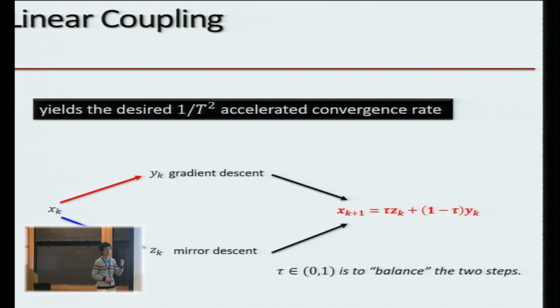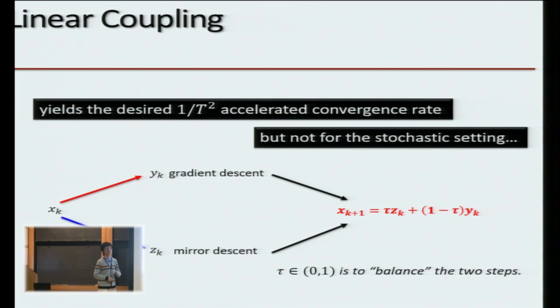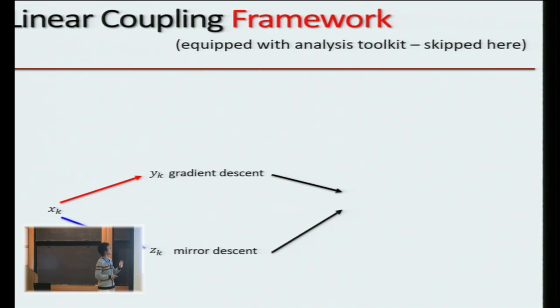But unfortunately, this one does not work in the stochastic setting. So in order for this coupling to work, we have to make sure the two steps use full information about the exact gradient, but not the randomized stochastic gradient. But fortunately, remember, I kept saying that it's the linear coupling framework.